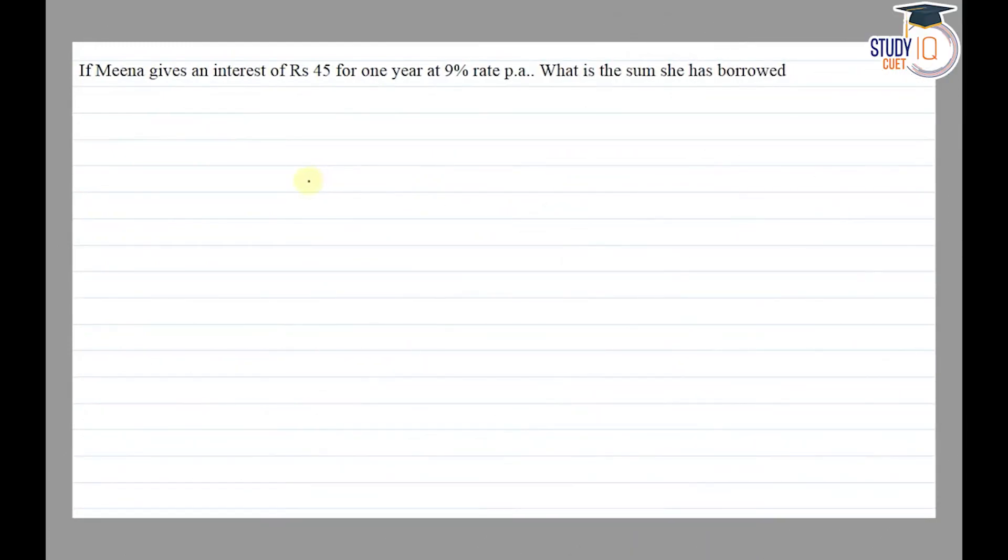Hello everyone, this question appears in Class 7th NCERT chapter on comparing quantities. This is question 11 of exercise 8.3. The question says that if Mina gives an interest of Rs. 45 for one year at 9% rate per annum, what is the sum she has borrowed? Given: Interest SI = 45 rupees.